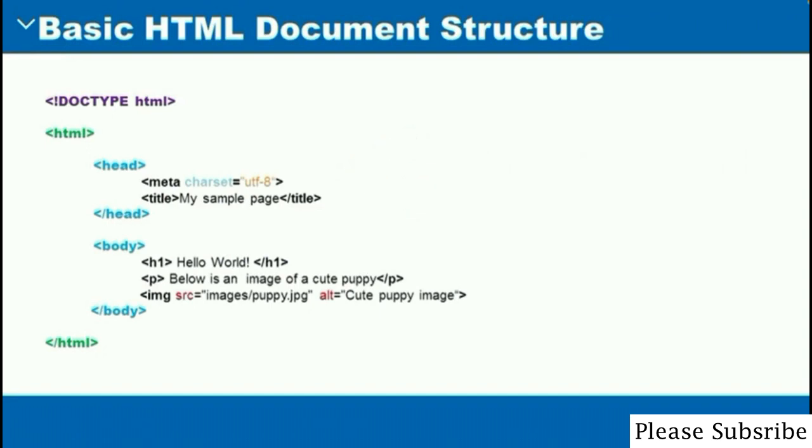Next, we have the body element. The body element contains the visual content of the page. When you visit a website, the actual content you can see is the content that is wrapped between the body tag. Anything between the opening and closing body tag is the visible content that is displayed on the web page.